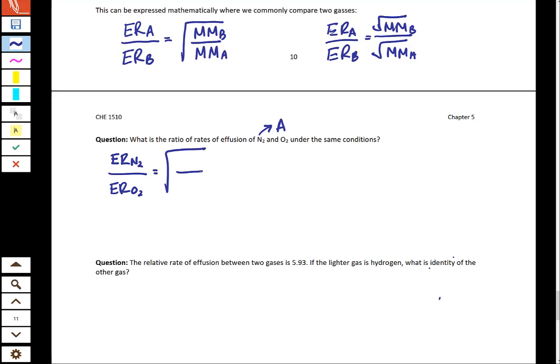We're going to call the effusion rate of N2 RA and have that on top versus the effusion rate of O2. The molar mass of oxygen, because it's diatomic, is 32 grams per mole. The molar mass of nitrogen, because it's diatomic, is 28 grams per mole. When you carry this out, you're going to get this ratio of the effusion rate of nitrogen to the effusion rate of oxygen being just over 1, so 1.069.